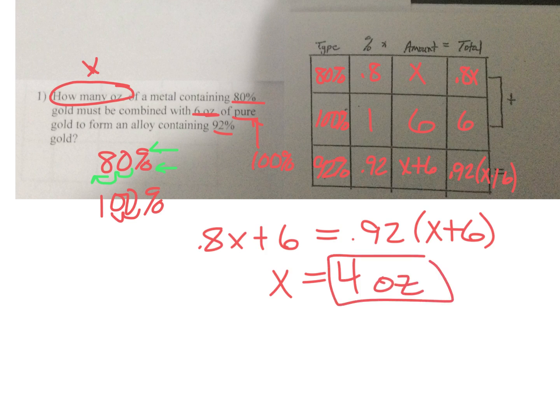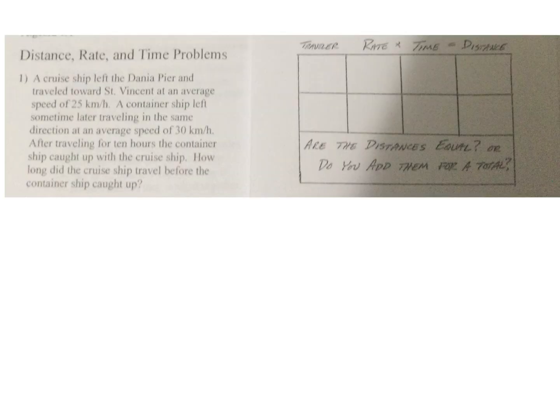This next problem is a distance, rate, and time problem. A cruise ship left the Dania pier and traveled towards St. Vincent at an average speed of 25 kilometers an hour. A container ship left sometime later traveling in the same direction at an average of 30 kilometers an hour.